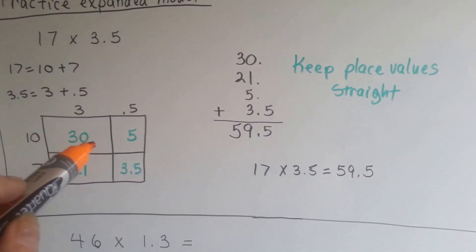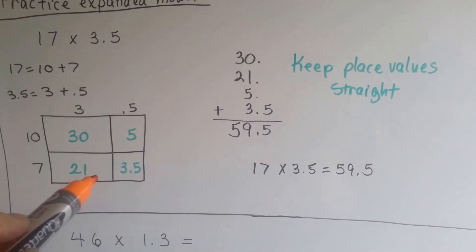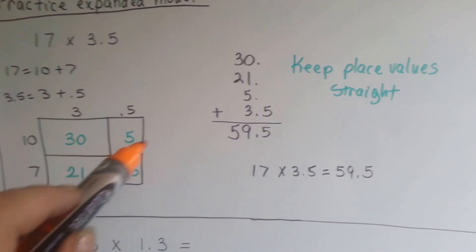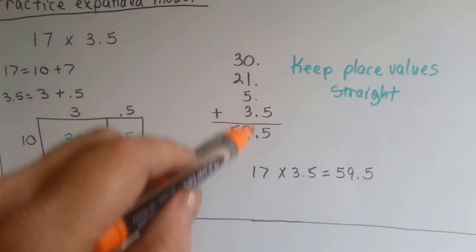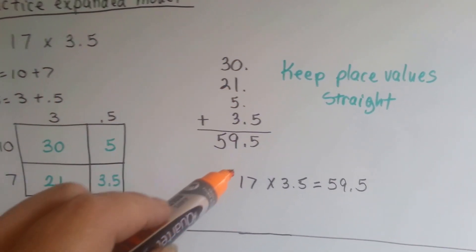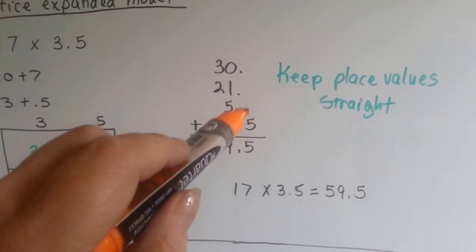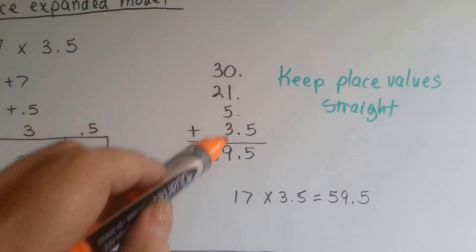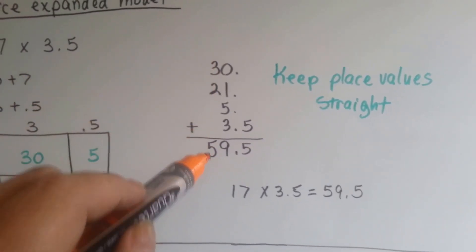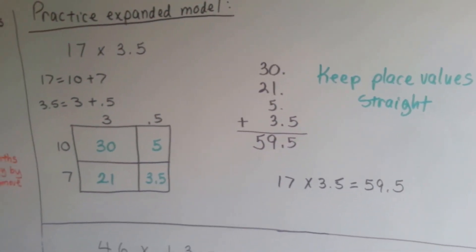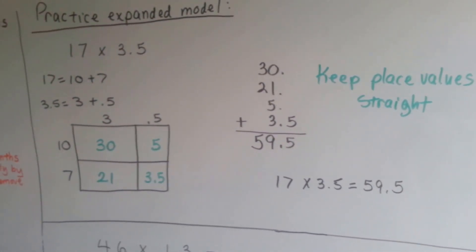We add them all up, and we can put decimal points at the back end of our whole numbers to help keep the place values straight. The 5 drops down. 1 and 5 and 3 is 9, and 3 and 2 is 5. So our answer is 59 and 5 tenths.